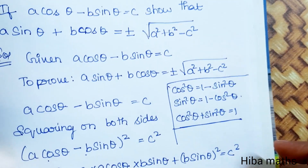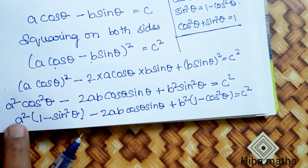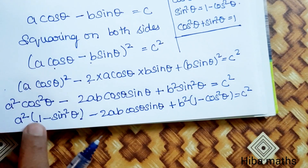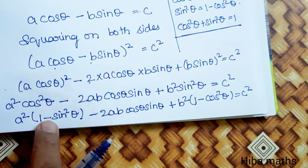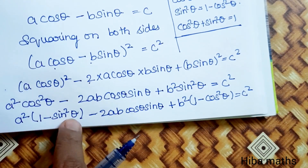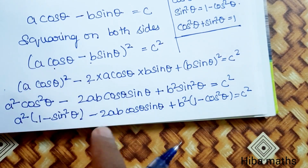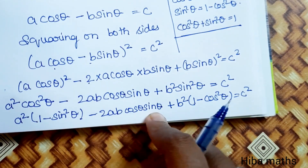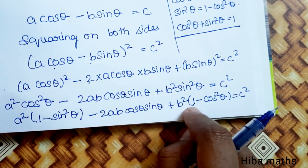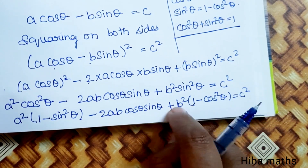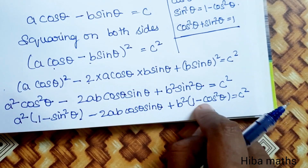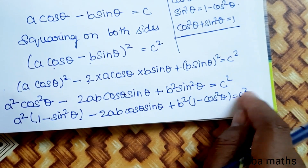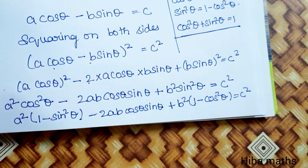So next line: a squared minus a squared sin squared theta minus 2ab cos theta sin theta, then b squared minus b squared cos squared theta is equal to c squared.